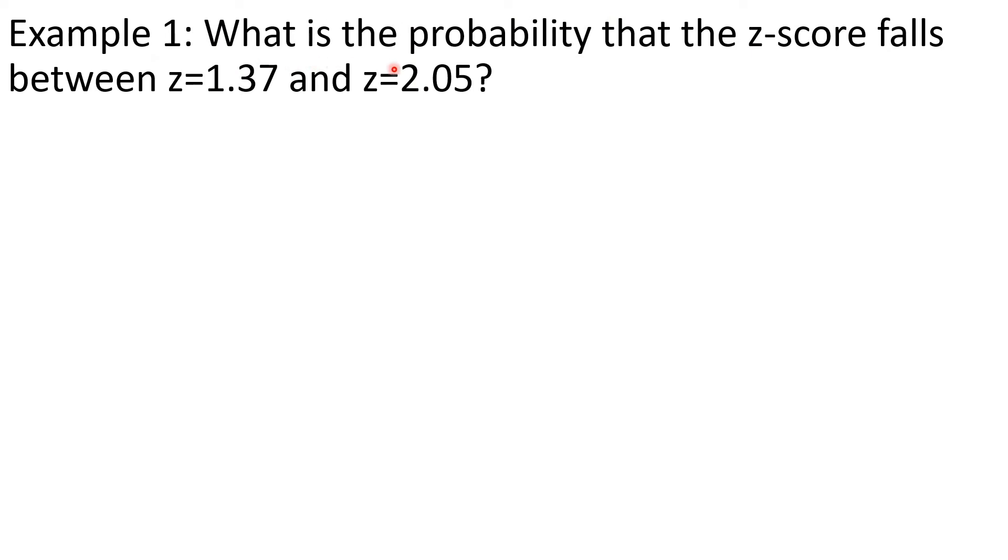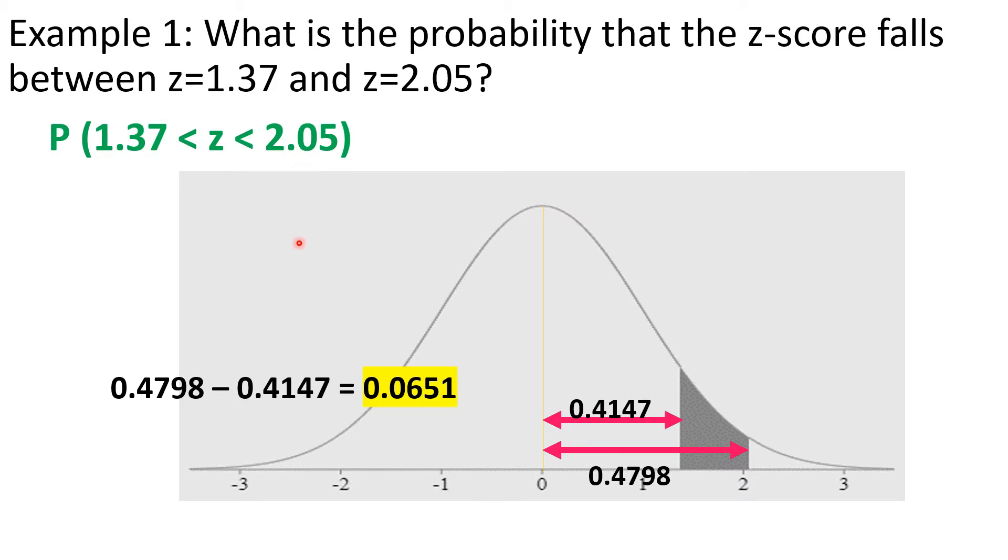Example 1. What is the probability that the z-score falls between z equals 1.37 and z equals 2.05? This probability may be expressed in terms of this notation: P or probability that z is between 1.37 and 2.05. Recall that from the previous lesson, we've solved for this already by using the normal curve, by locating it under the normal curve, and by using the z-table.